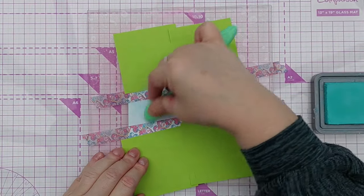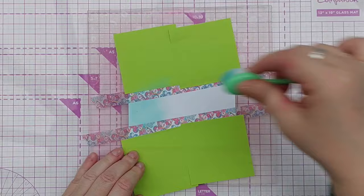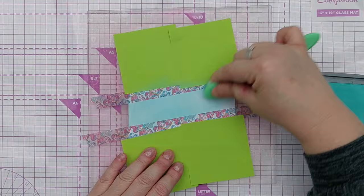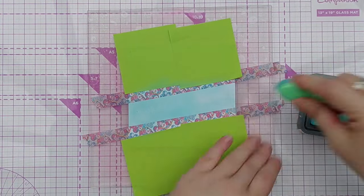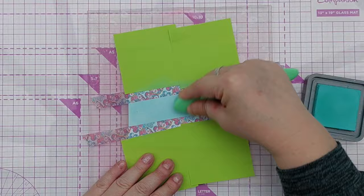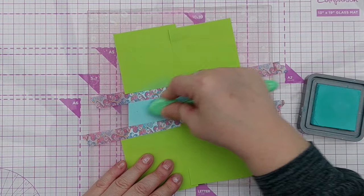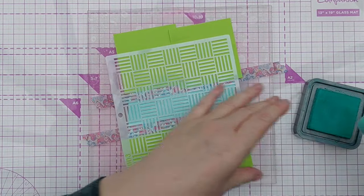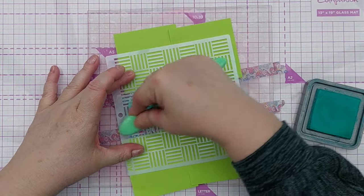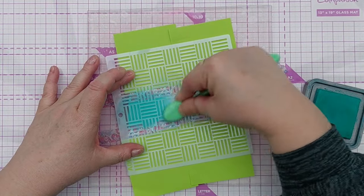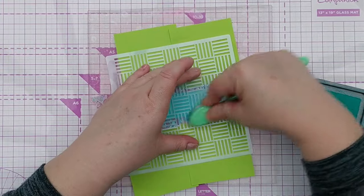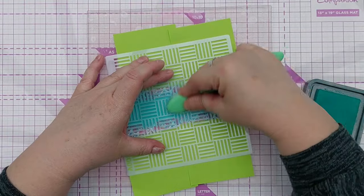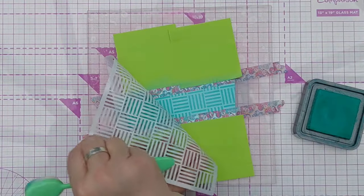Next I took salvaged patina distress oxide and blended that on the exposed area to get a nice even blend across the panel. And then I brought in this stencil and used peacock feathers to add some dark lines over the salvaged patina. I chose this stencil because I thought it would fit really nicely in the gap that I had added the salvaged patina to.